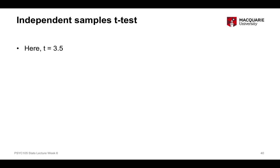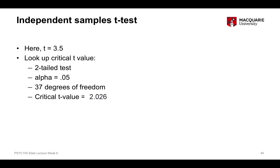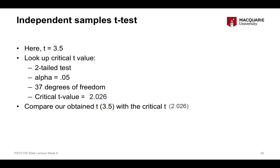With a t-statistic of 3.5, we can use the critical t-table to look up the critical t-value for 37 degrees of freedom. We're using a two-tailed test of significance with a critical alpha of 0.05. Our critical t-value is 1.687. Comparing our obtained t of 3.5 with the critical t of 1.687, our obtained t is bigger, and therefore we can reject the null hypothesis.